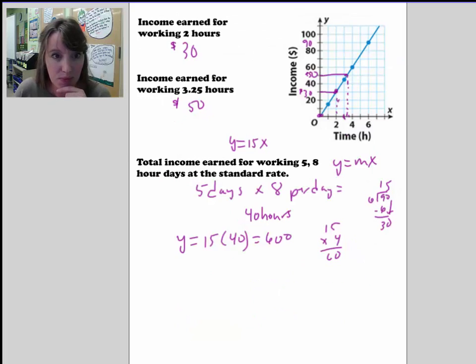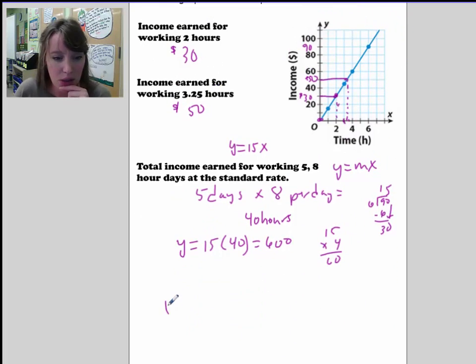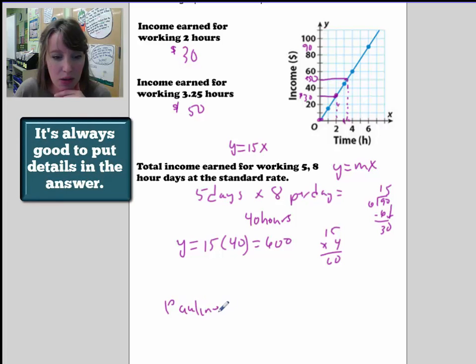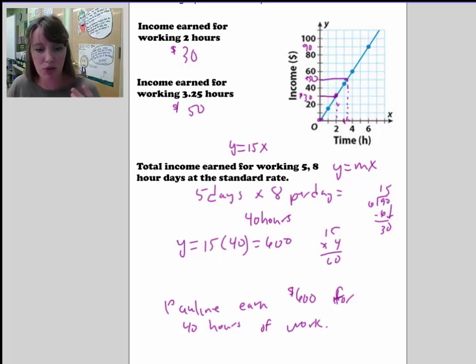So Pauline earns $600 for 40 hours of work. And that is a perfect answer to this question. You answer in a full sentence. If you have a word problem, you always answer in a full sentence. And that is the end of the lesson for today.